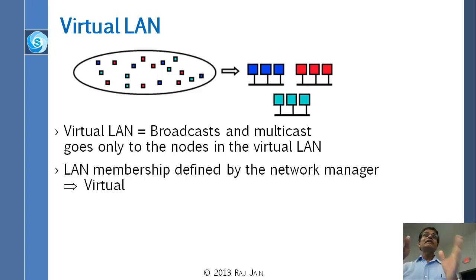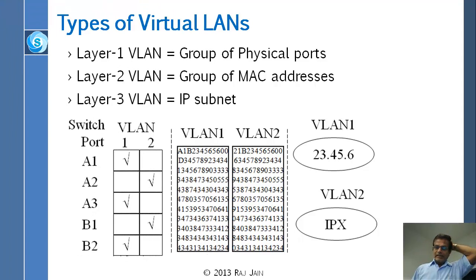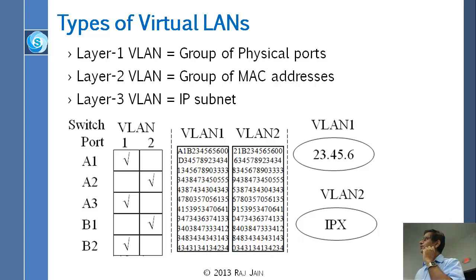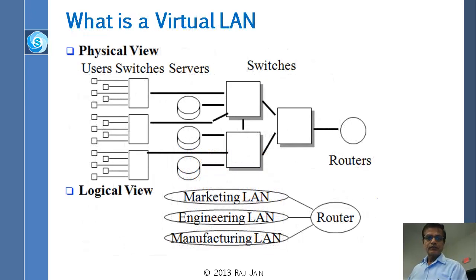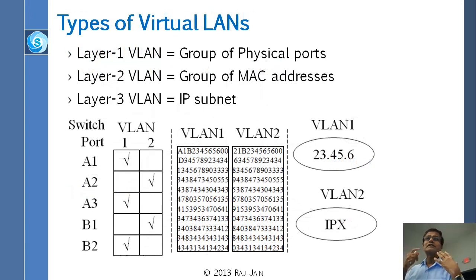They went through several approaches. First, they thought layer 1 port-based assignment would work — each port declared as a VLAN. For example, port A1 is in VLAN 1, port A2 is in VLAN 2, port A3 is in VLAN 1. You go port by port and assign the end hosts. But this is too much work, because somebody has to track every day whether the marketing employee has moved or is still there.